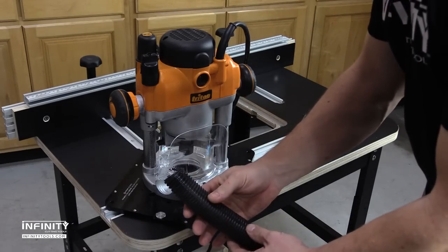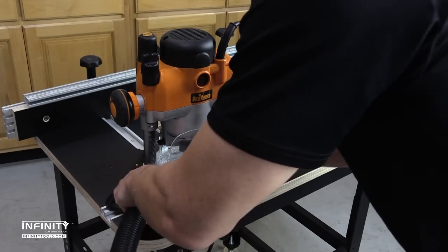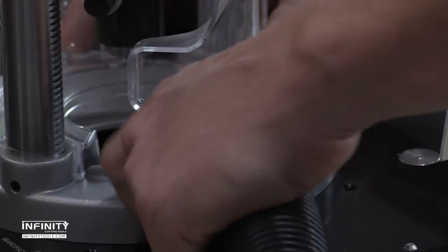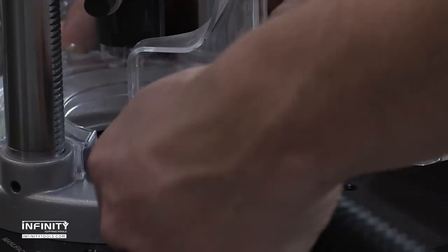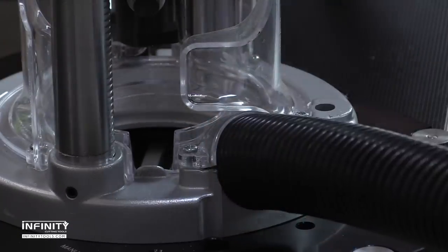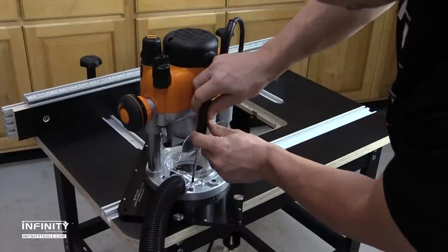Another great feature of the Triton router is the built-in dust shroud with a 1-1/2-inch threaded port to attach a hose to collect dust directly from the source. Not only is the system very efficient, it eliminates the need for a dust box surrounding the router.